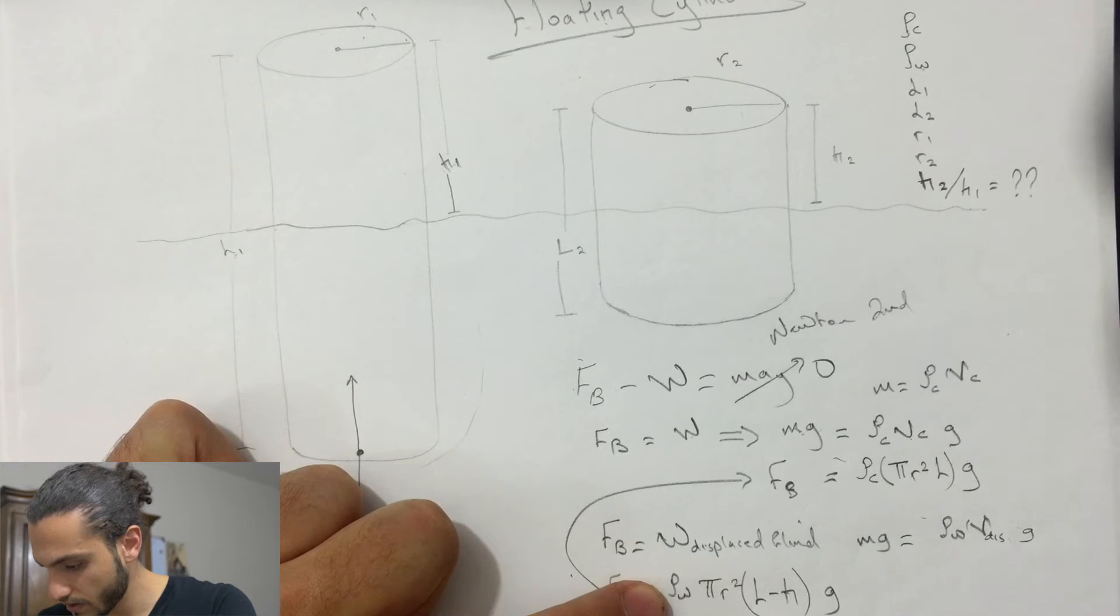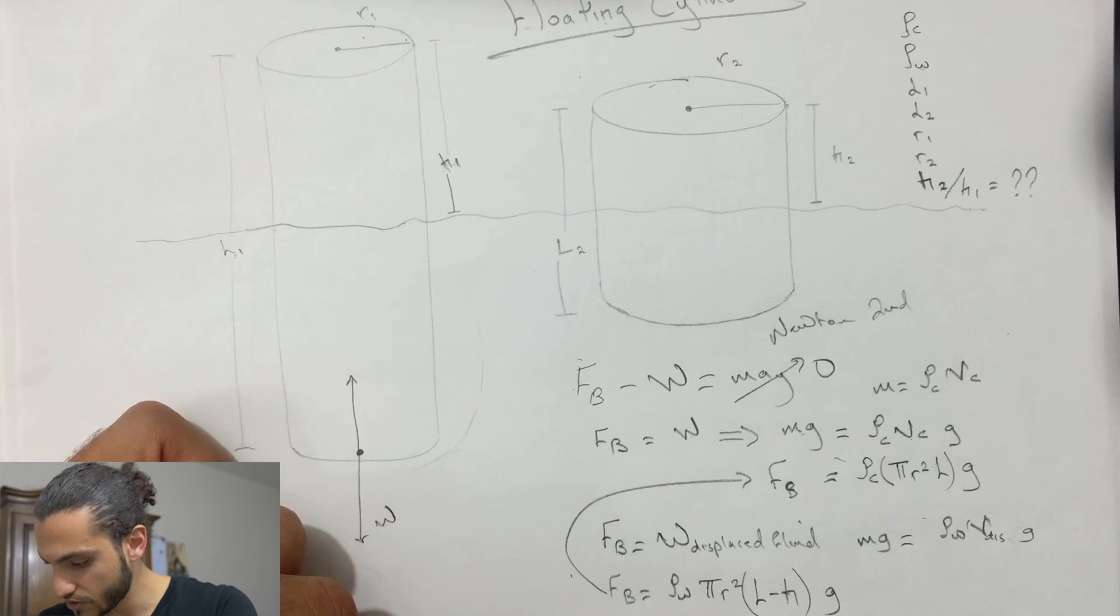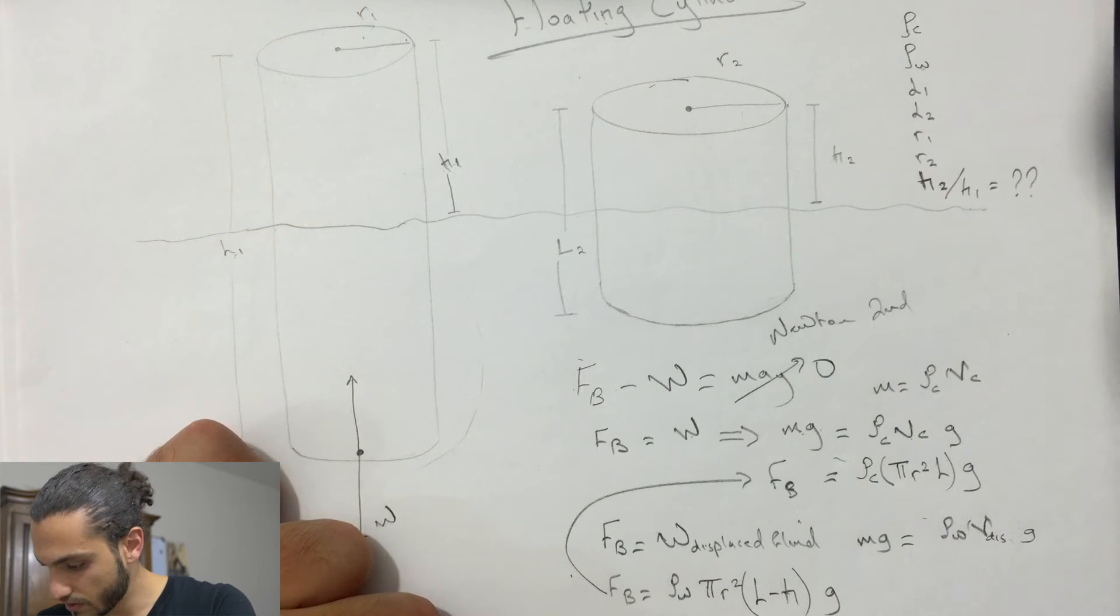We can see you can take out the G's in here. What we can take is the pi and r squared. So we're left with L minus H equal to...